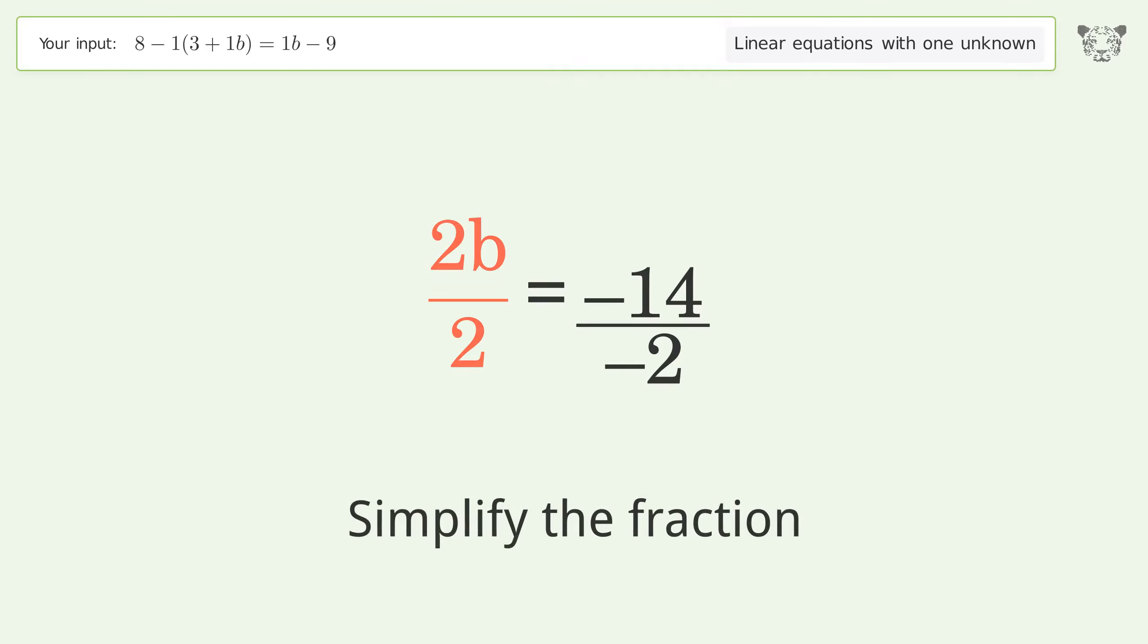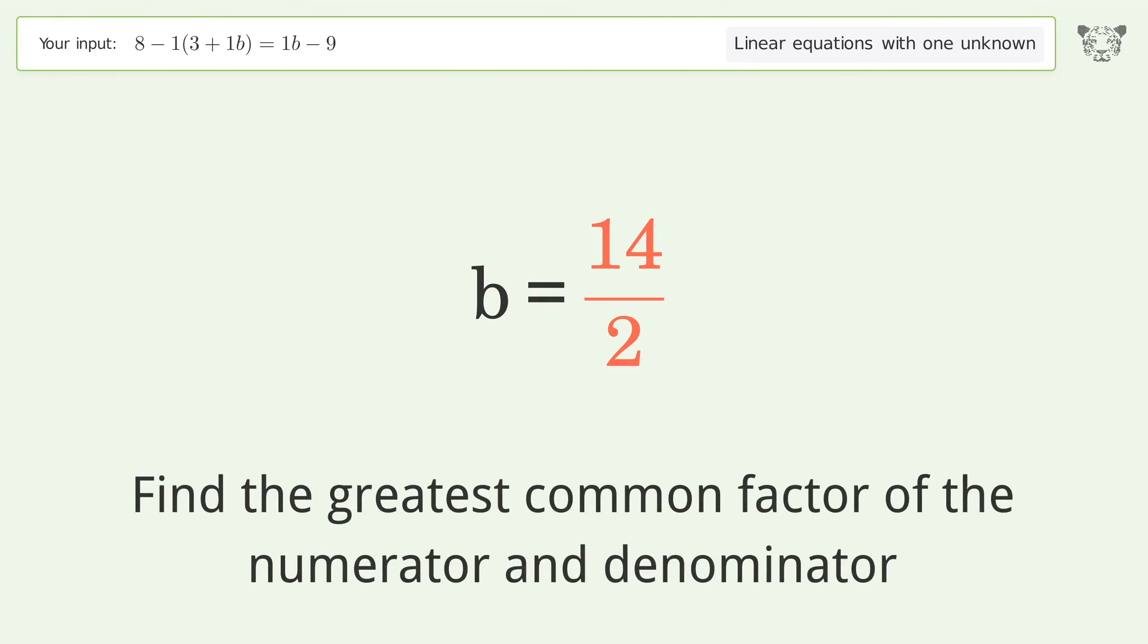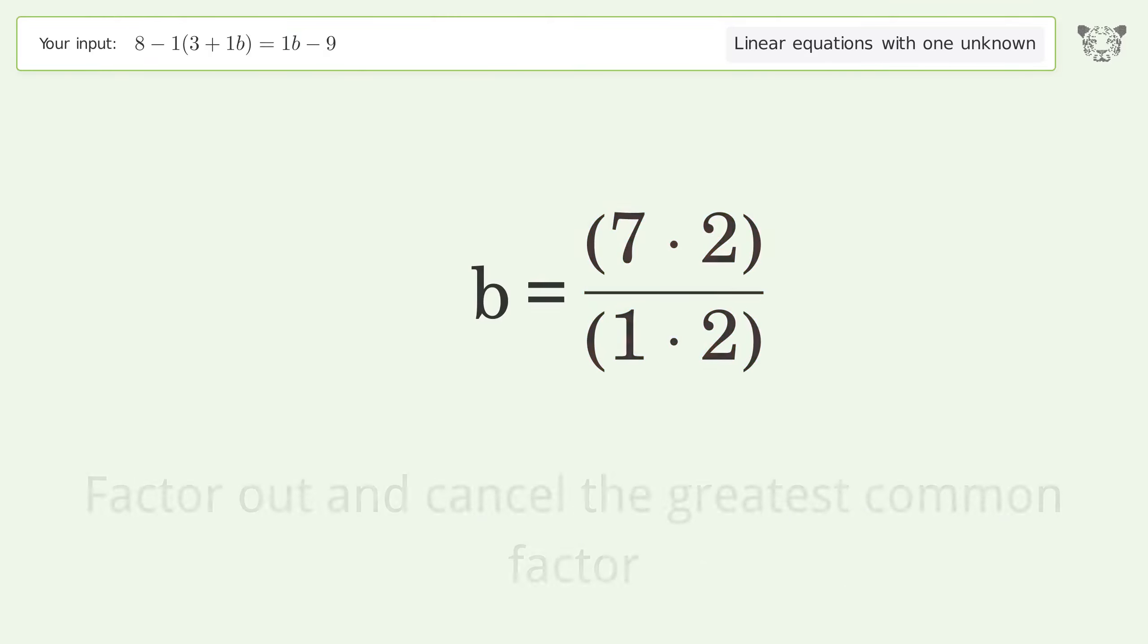Simplify the fraction, cancel out the negatives, find the greatest common factor of the numerator and denominator, then factor out and cancel the greatest common factor.